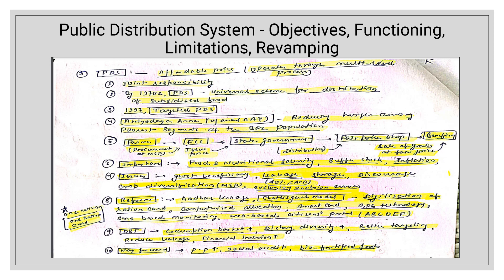The importance of PDS: food and nutritional security is very important, as India faces significant malnutrition. It is essential to provide nutritious food to the population at large. Buffer stock management through PDS also helps control inflation.